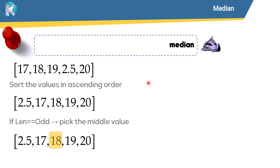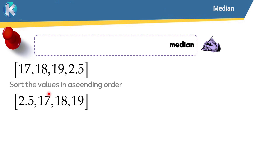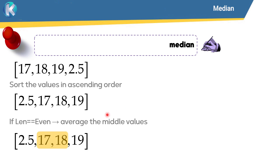What happens if the number of data points is even? Consider this example: we have 1, 2, 3, 4 data points, and 4 is an even number. The first step is to sort the values in ascending order. If the number of data is even, you should average the two middle values. Here we have two middle values, so we average them: 17 plus 18 divided by 2 equals 17.5. This is the median of this data.